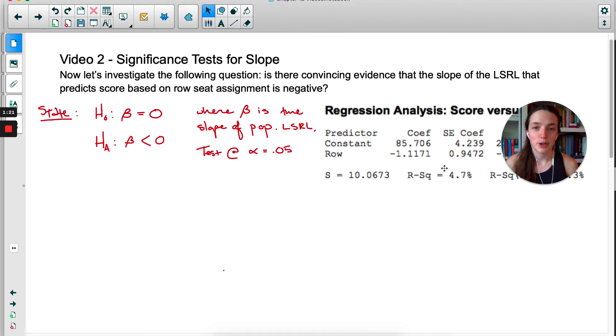I included where beta is the true slope of the population least squares regression line, and let's just test at 0.05 because why not? The plan step, liner, exact same conditions as for the confidence interval, so I'm not going to get into that now. That was in the last video.